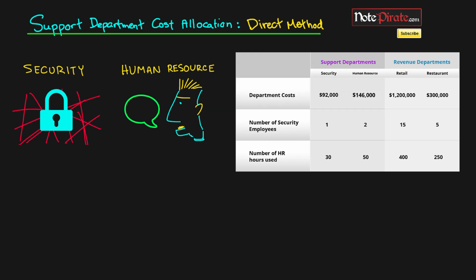Using this method we can start with either Security or HR. I'll start with Security since it's on the left. Let's allocate Security to the first revenue producing department, Retail. We're going to take the $92,000 of department cost and prorate it based on the amount of the security department that Retail uses.